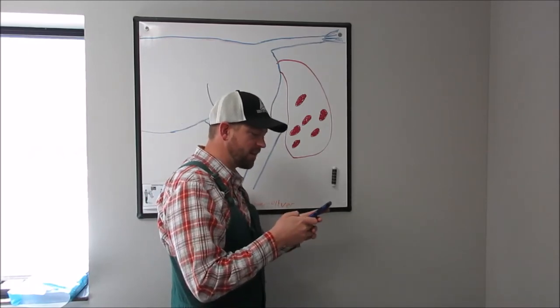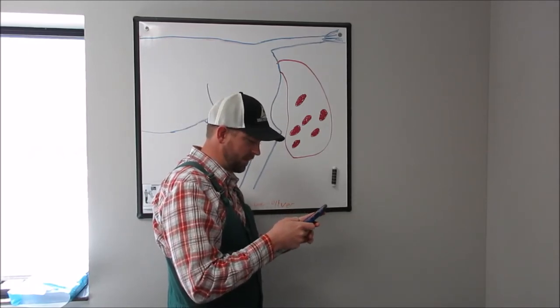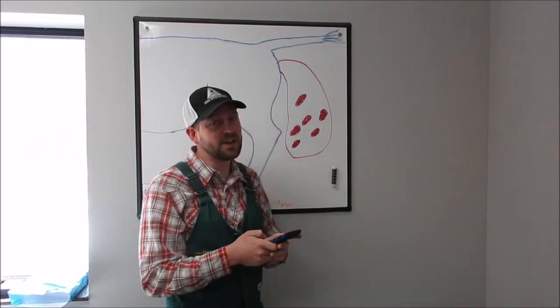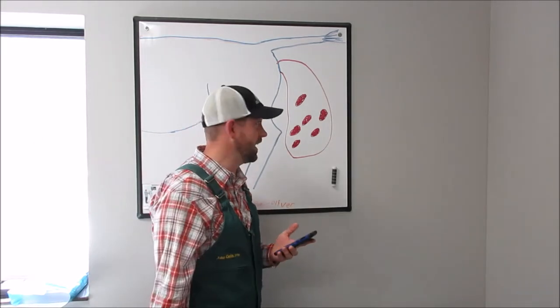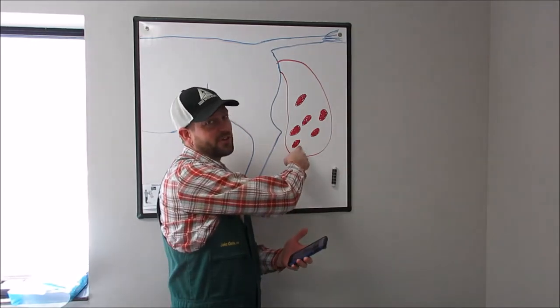Cotyledon, the embryonic leaf in seed-bearing plants, wait a minute, that's the wrong definition. Cotyledon, the fetal side of the placenta, therefore, technically, these are the caruncles.